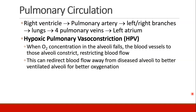Now let's focus more on the pulmonary circulation. Blood starts in the right ventricle as deoxygenated blood. It goes out the pulmonary artery, which branches into the left and right pulmonary arteries, and they go to the left and right lungs where the blood becomes oxygenated. The blood comes back together through four pulmonary veins, which drain blood into the left atrium.